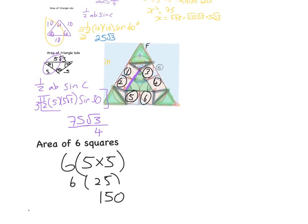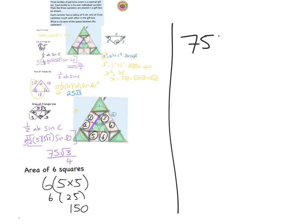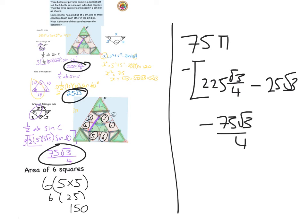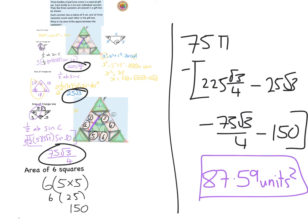Now we have all the shapes. We were asked for the area the perfume bottles do not cover. Area of circles = 75π. Subtracting all inner areas: 75π − (225√3/4 + 25√3 + 75√3/4 + 150). The final answer is 87.59 units squared — this is the area not covered by the three circles.